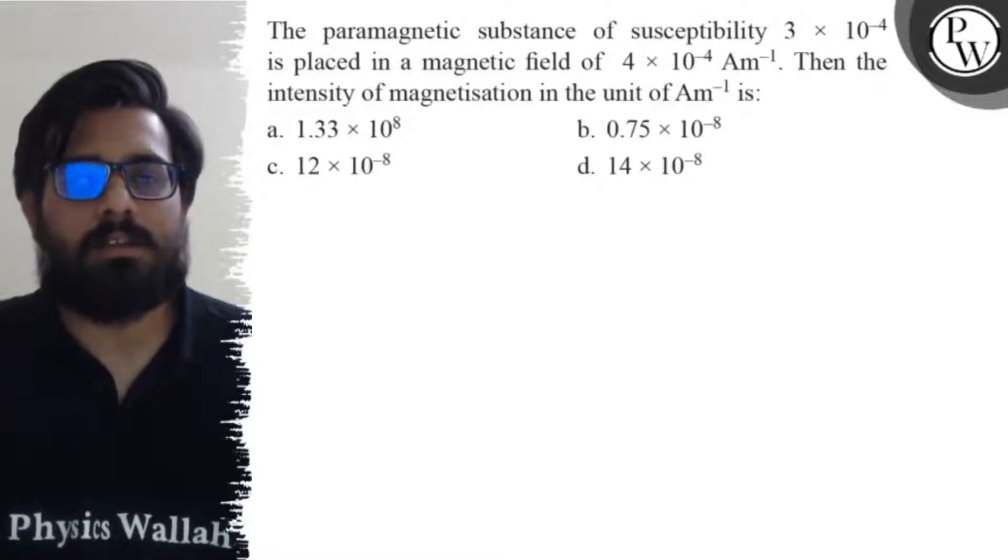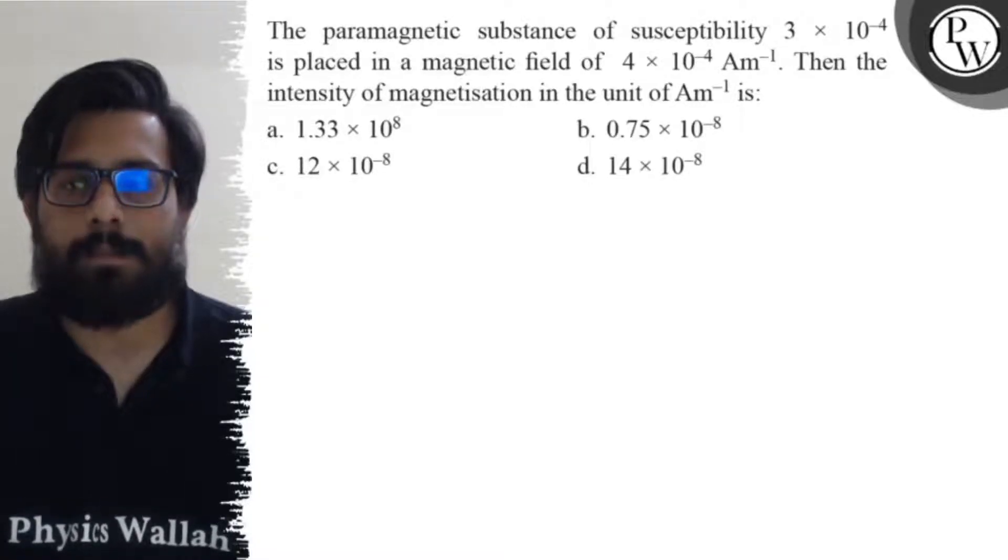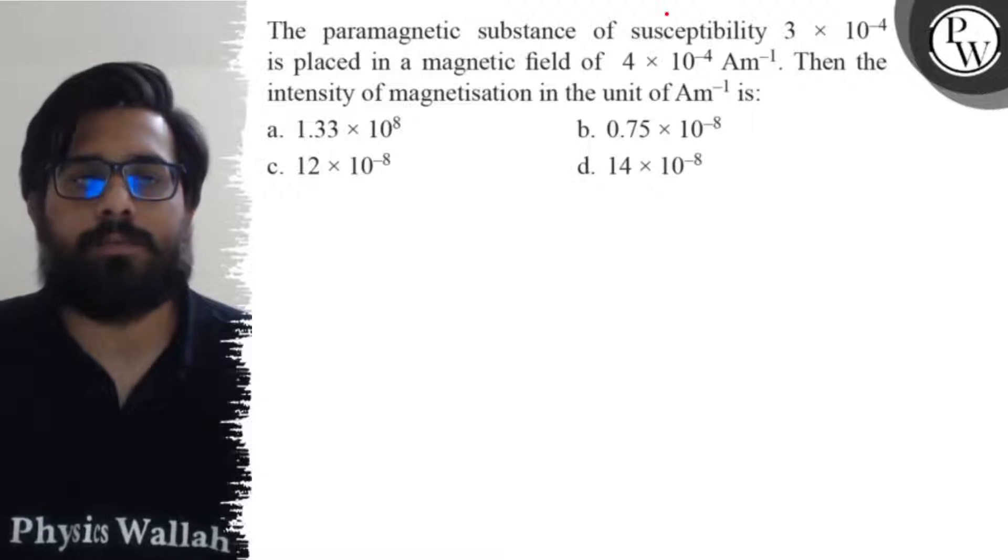Hello! Let's see the question. A paramagnetic substance of susceptibility 3×10^-4 is placed in a magnetic field of 4×10^-4 ampere per meter.